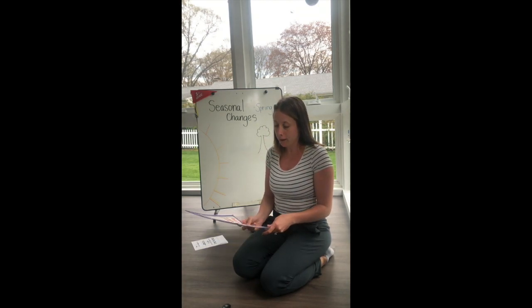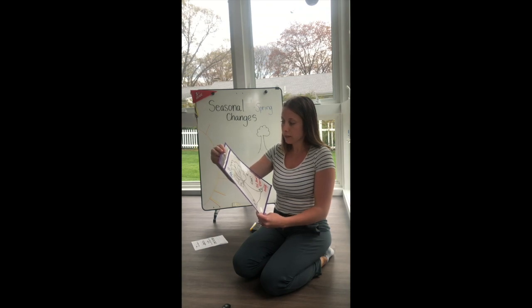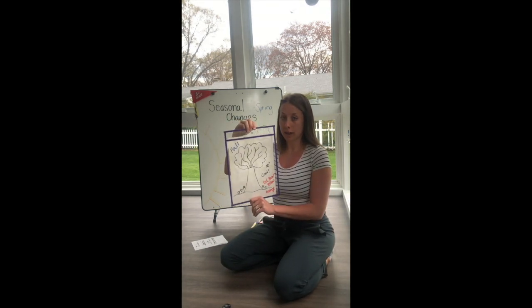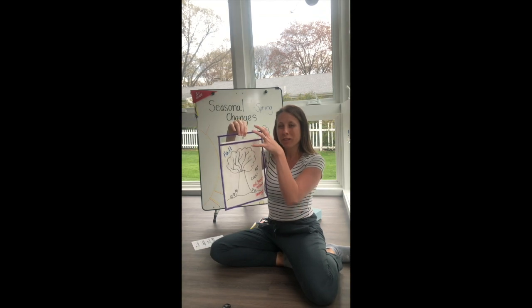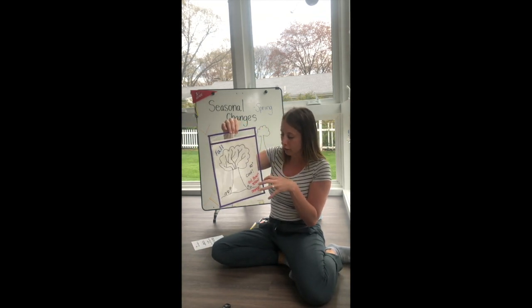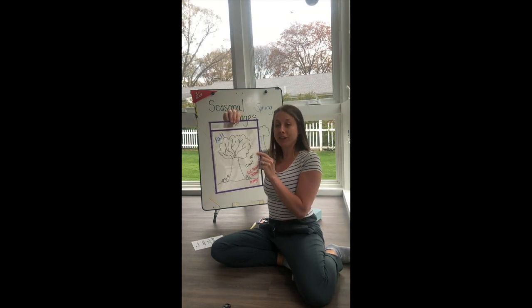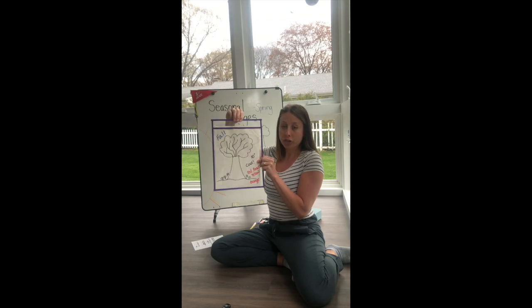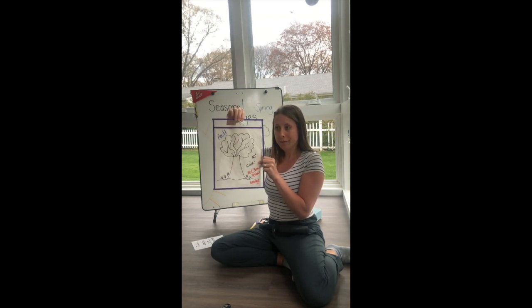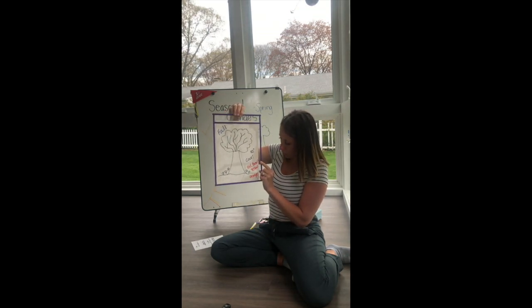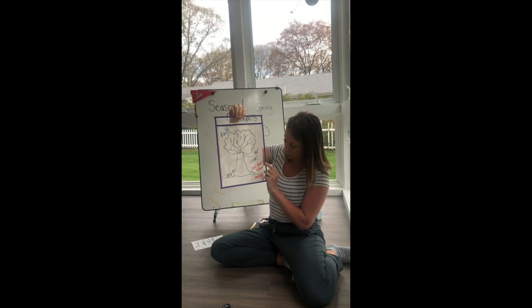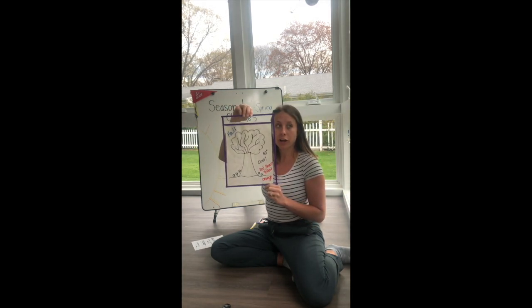Now, because you guys don't have your science journals with you and can't just flip back, I'm going to remind you. So I did some quick drawing, and here's what your fall tree looks like. A lot of you had leaves on the ground, you could see the branches — it wasn't full anymore with leaves, they were starting to fall. It was about 50 degrees out the day we did it. It felt cool outside, so we might have had sweatshirts or light jackets on. And for the writing piece, 'The Leaves on My Tree Look' — most of you wrote colors like red, brown, yellow, and orange because the leaves were starting to change color.